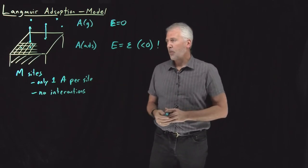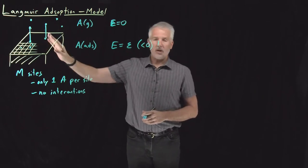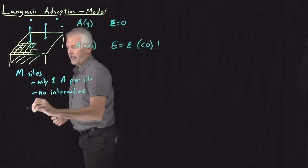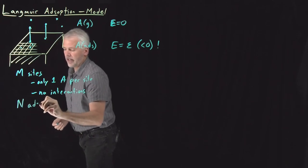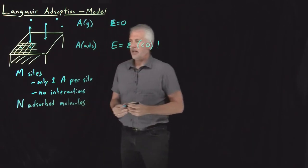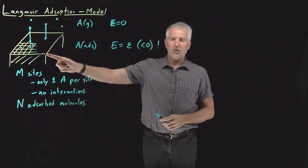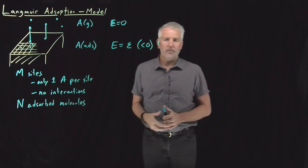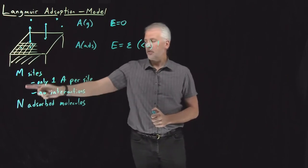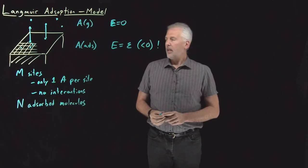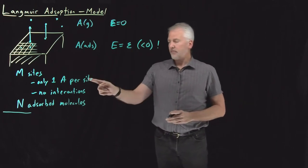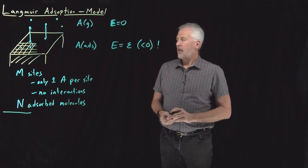But for our simple first model, we'll assume that the molecule sticks to the surface with some energy epsilon, regardless of where it sticks. Every lattice site it binds with the same energy. And then the only other thing we need to define is a count of how many of these M sites are full. If I have M total lattice sites, some fraction of them are going to be occupied by molecules, the total number of adsorbed molecules out of those M possible sites is going to be N. So those are my choice of the two variables we'll talk about for that system.